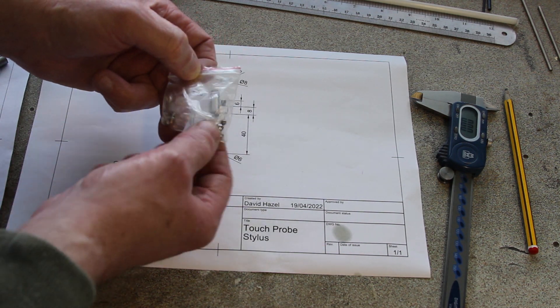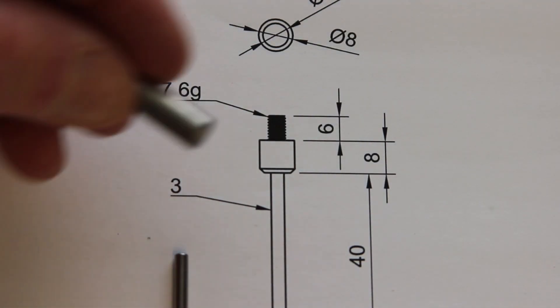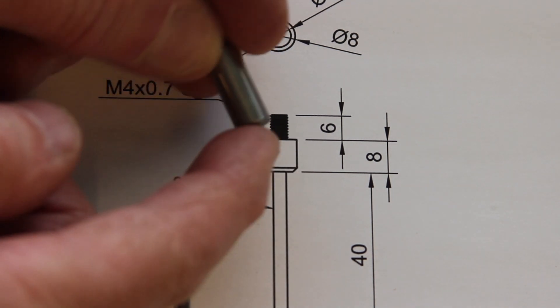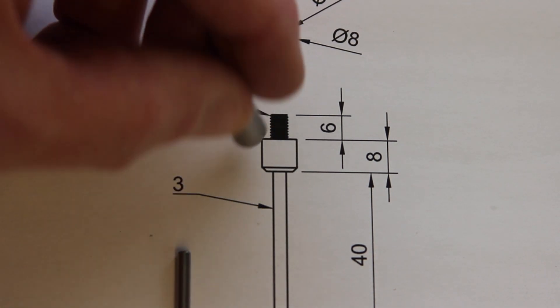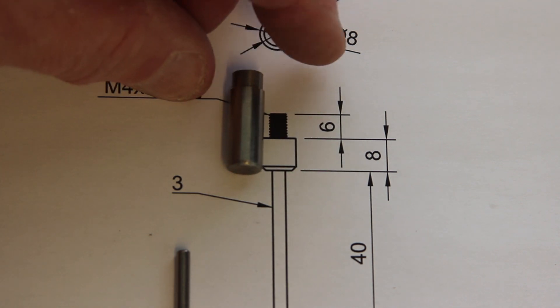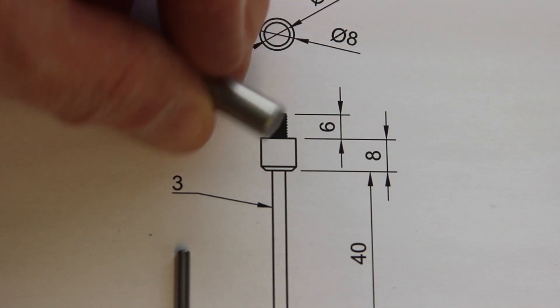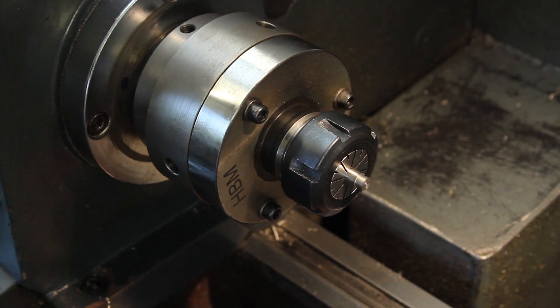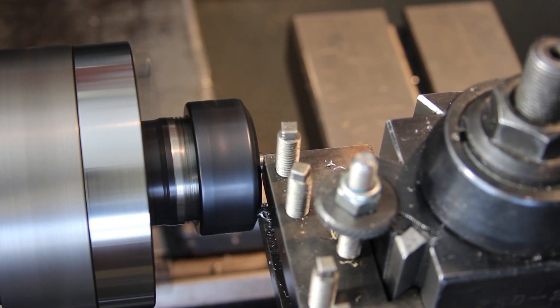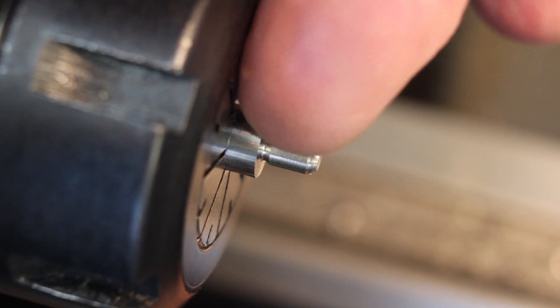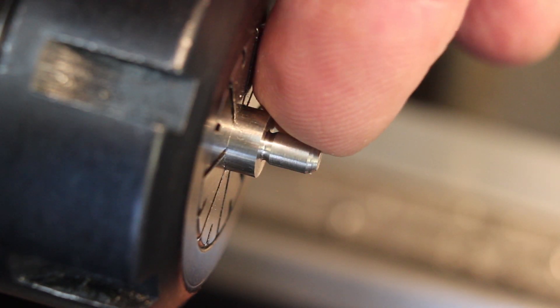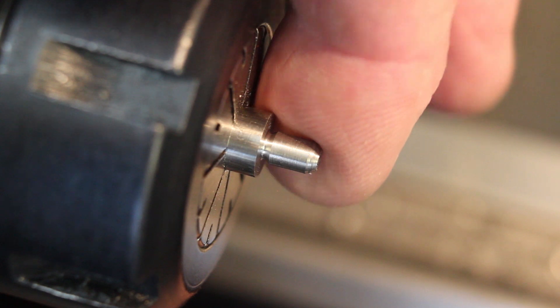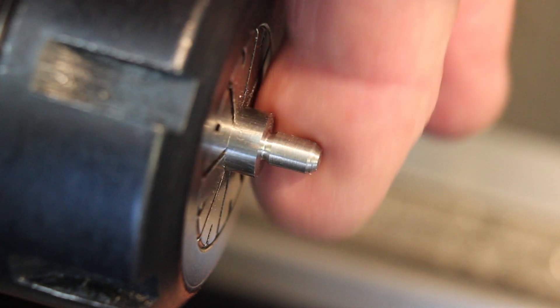Right, here's my eight millimeter silver steel chunk. I'm going to make the base out of this, so let's put this in a collet chuck and get on with it. I think I'm just going to use a die rather than single point cutting, and see how we get on.